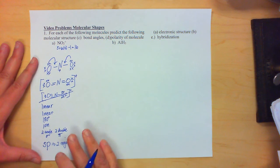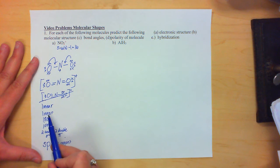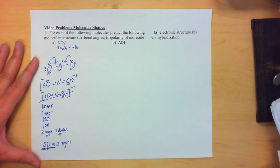So we will have worked this one. Electronic is linear, molecular is linear, angles are 180, it's an ion, and it's SP hybridized.